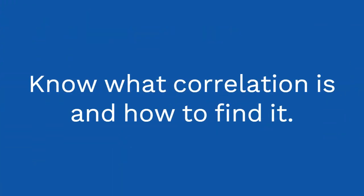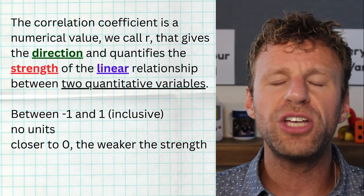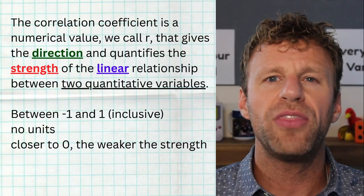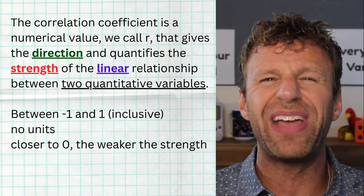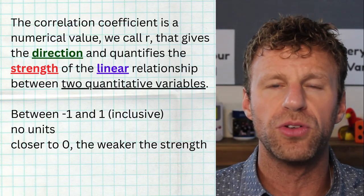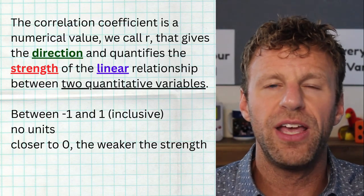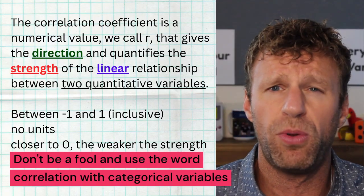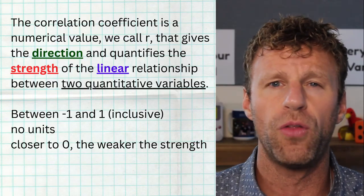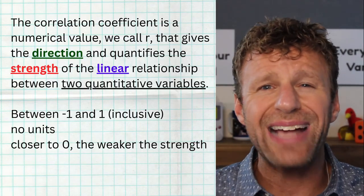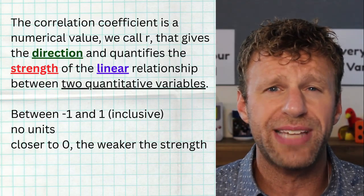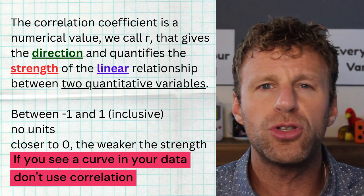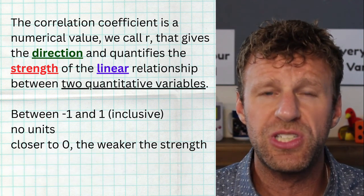Tip number four is all about correlation. You have to know what it is, how to find it, and how to interpret it. Correlation is a specific value that determines the direction and strength of a linear relationship between two quantitative variables. First, the variables must be quantitative — if one is categorical, you cannot use the word correlation. Second, your data has to be somewhat linear. Correlation is specific for linear data.